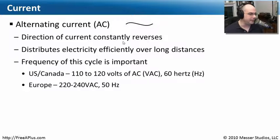Now, the frequencies of this cycle, which you can see are very long or very short, will depend on where you are. In the United States and Canada, we usually will get 110 to 120 volts of AC. And you can see that runs at a cycle, a frequency of 60 hertz, which is abbreviated as HZ.